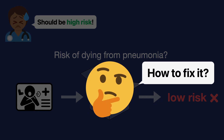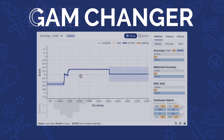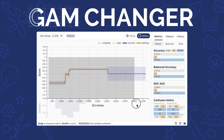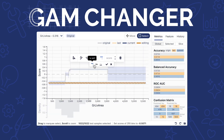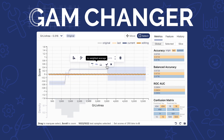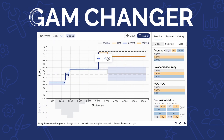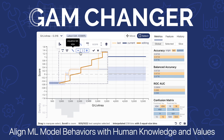To answer this question, we have developed GAM Changer, the first interactive visualization system to help domain experts and data scientists easily and responsibly edit the weights in generalized additive models. Through interactive editing, users can align model behaviors with their knowledge and values.